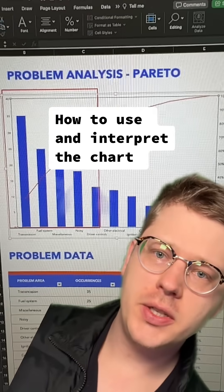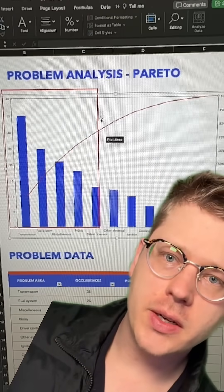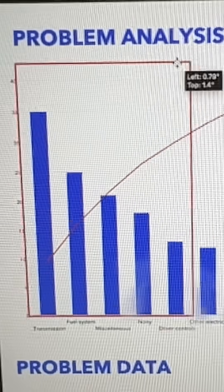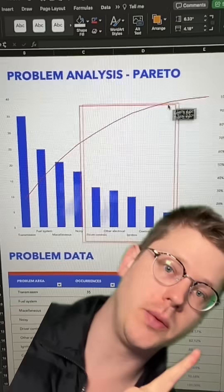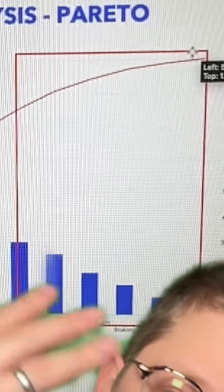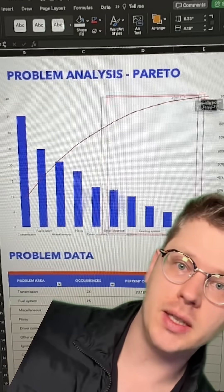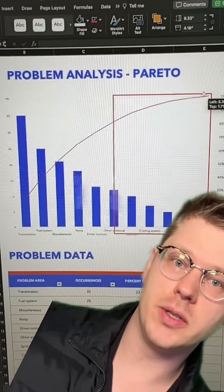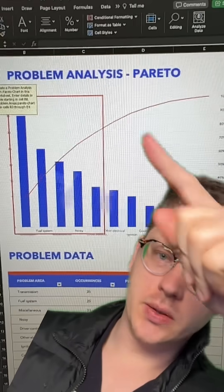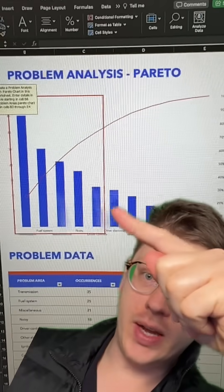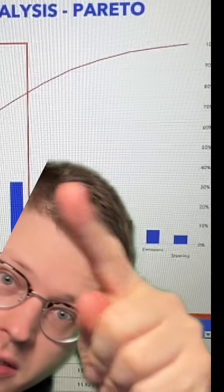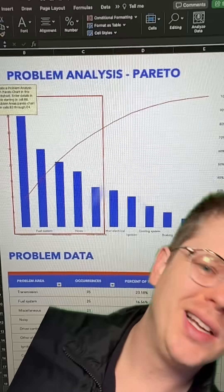How do you interpret one of these? Essentially, everything over here on the left is going to be big problems with a high frequency. Everything over on the right is going to be smaller problems with a smaller frequency. That's basically what this is helping you determine. Pareto is the 80-20 rule, essentially. So it's helping you figure out, hey, these are the areas we need to prioritize. This stuff down here does not matter nearly as much.